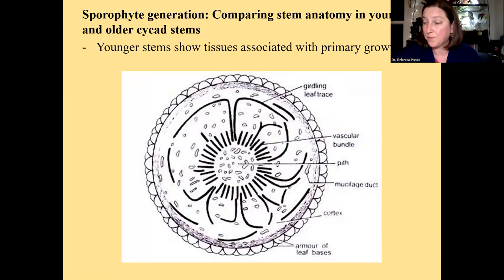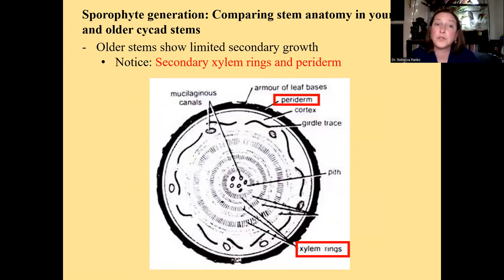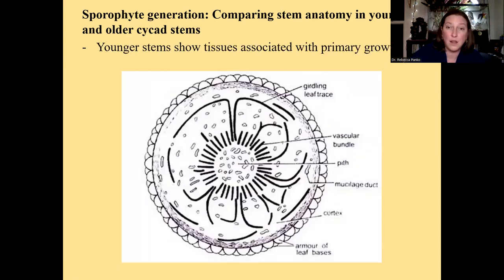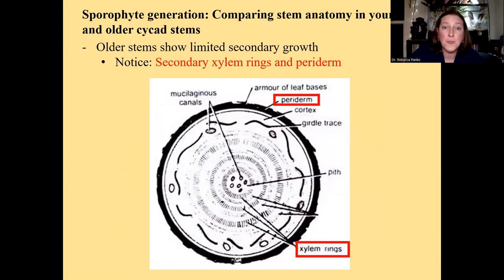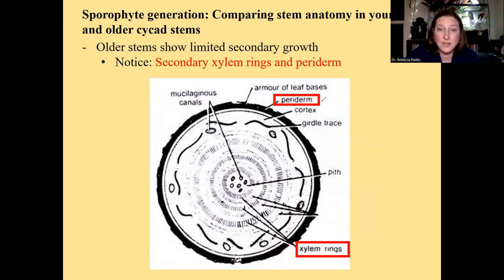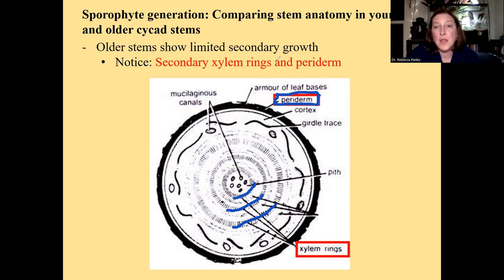This was a younger cycad stem. An older cycad stem has a lot more secondary growth. We can see secondary growth tissues such as the periderm, which contains cork, phellum, and cork cambium. We also see rings of secondary xylem. The point is cycads don't make that much secondary growth but are capable of it, and I'm showing you some of these terms on younger versus older stems.